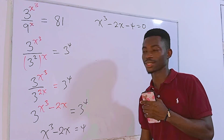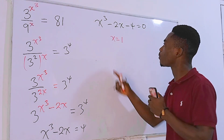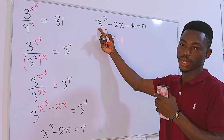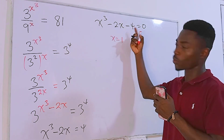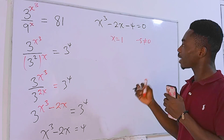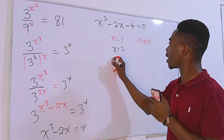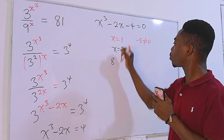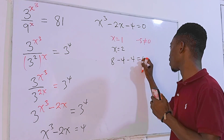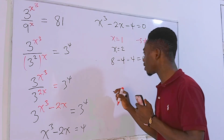To solve this cubic equation I'll test some values. Assuming x equals 1: 1 cubed minus 2 times 1 minus 4 gives minus 5, which is not zero. Assuming x equals 2: 2 cubed is 8, minus 2 times 2 is minus 4, minus 4 gives us 0. So x equals 2 works.